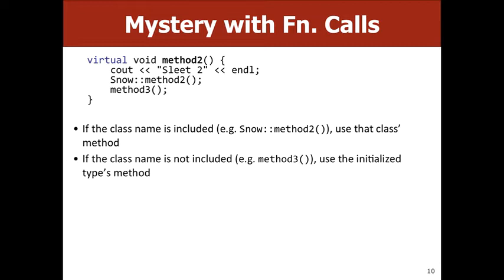There are two kinds of function calls inside methods. If you see a class name prefix like snow::method2, go to that class and execute that class's code — if that class doesn't have it, use its inherited version. If there's no class name prefix and it just says method3, you use the initialized type's method, regardless of which class we're calling it from. If there's no class name, it doesn't matter which class we're in — you use the right-side type's version.